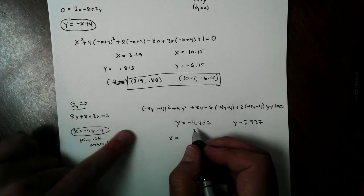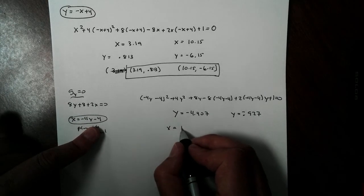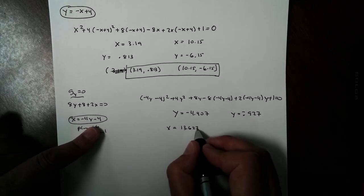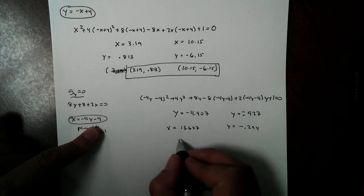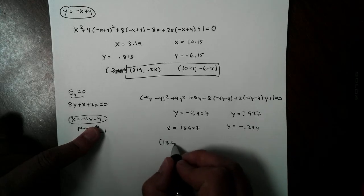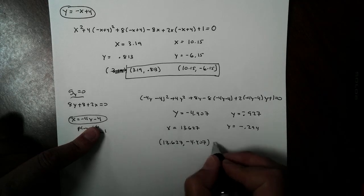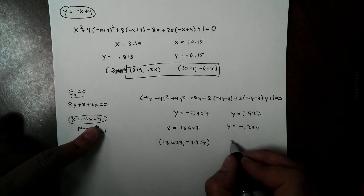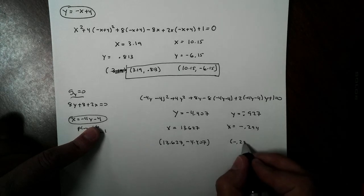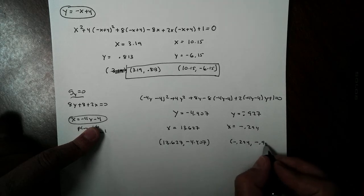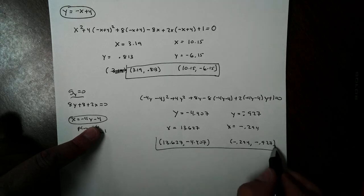To get their corresponding x values, you just plug into here. We get 13.627 and negative 0.294. So we get the points 13.627, negative 4.407 and over here, negative 0.294 and negative 0.927. There's our other two points.